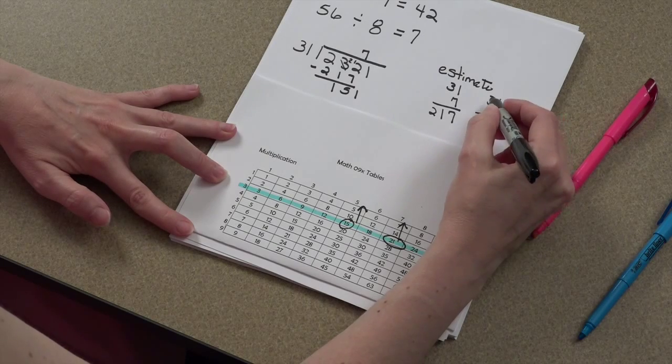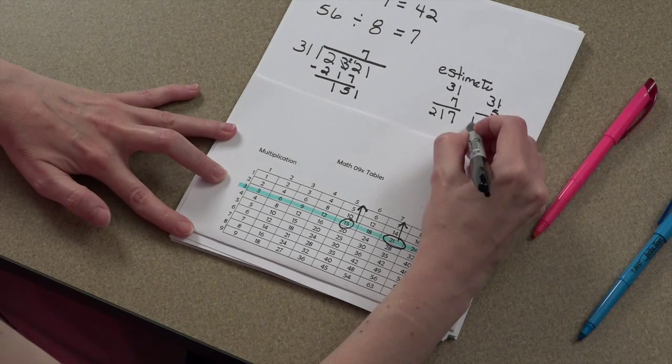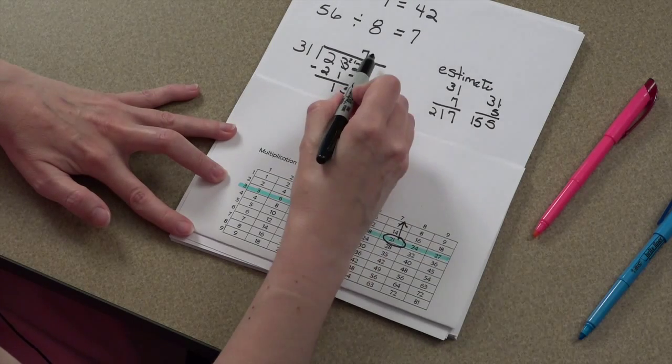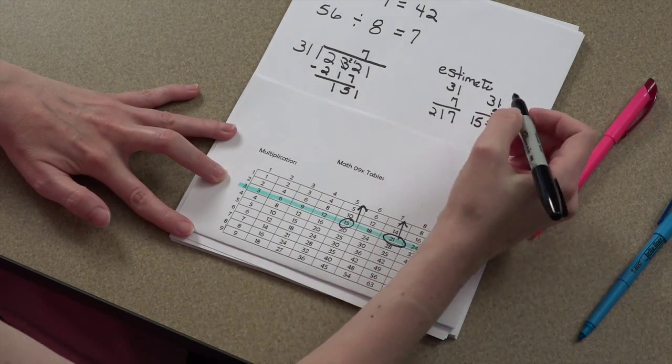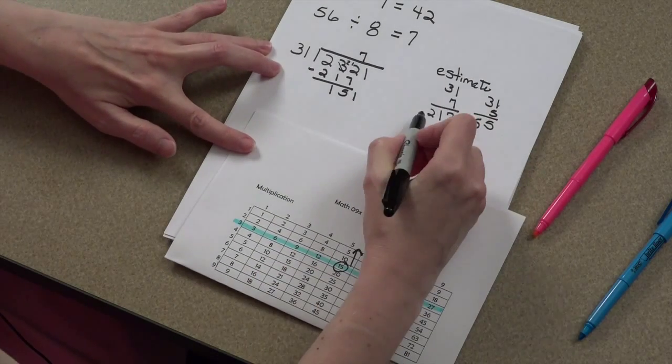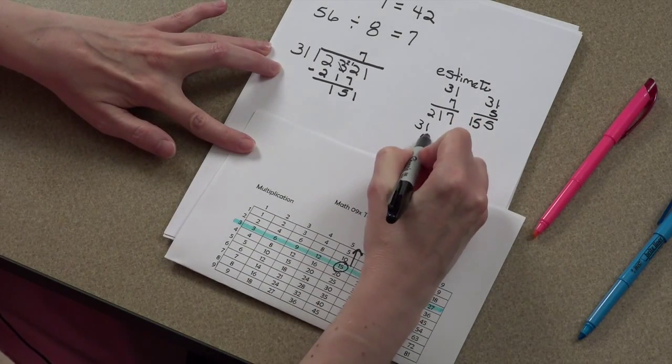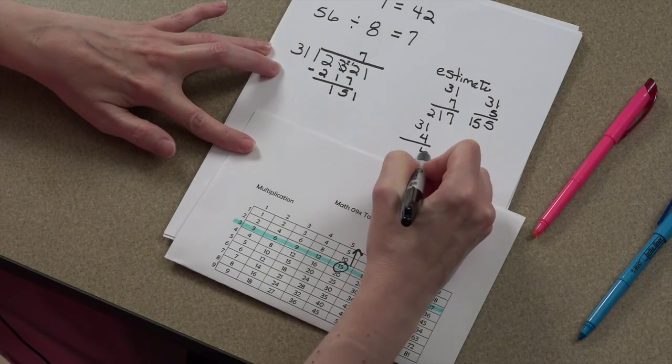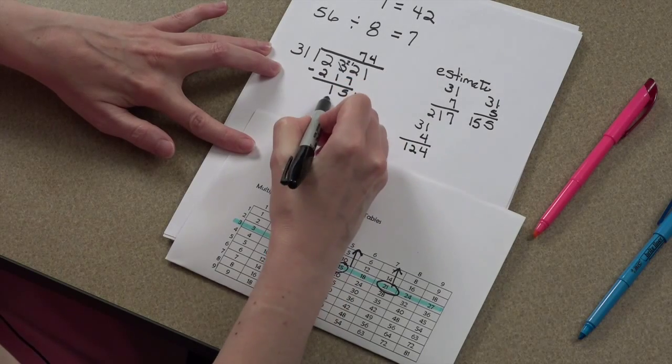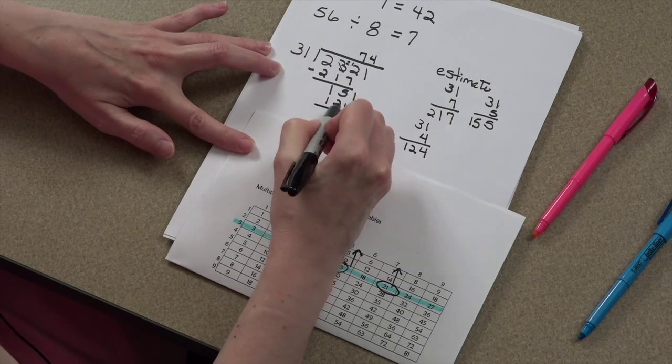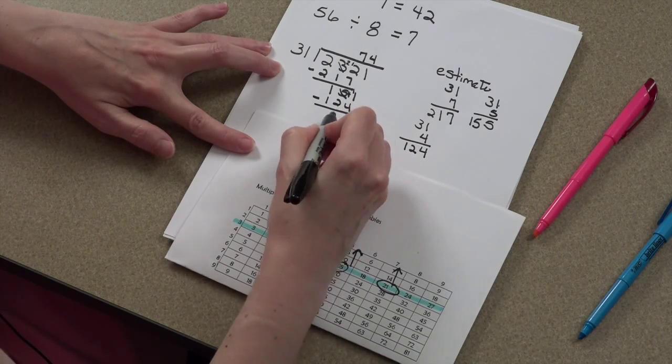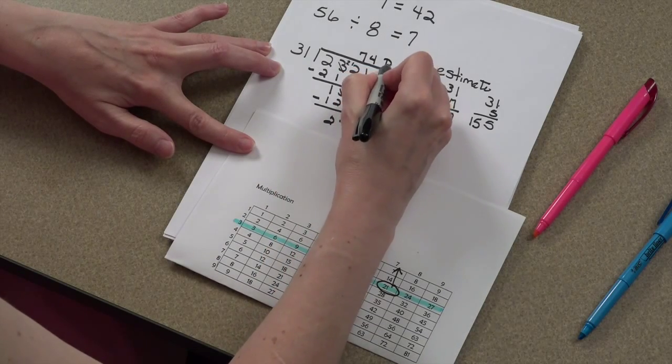1 times 5 is 5. 3 times 5 is 15. Oops, that's too big. We can't put a 5 up here. So what we'll do is we'll do a 4 instead. 31 times 4 is 124. We subtract, and our remainder is 27.